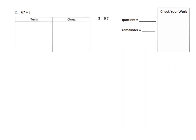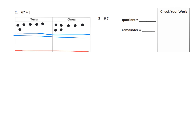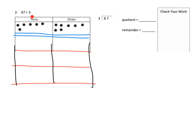So we have 67 divided by 3, and we're going to use the place value technique. We begin by modeling 67 — that's six tens and seven ones. I've modeled that, and now I'm going to separate it and make three groups. Why three groups? Because it says we're going to divide by three. So here's our 67 and here are our three groups.